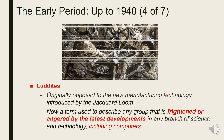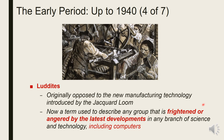The Luddites were people who originally opposed the new manufacturing technology introduced by the Jacquard loom. Now, the term Luddites is used to describe any group that is frightened or angered by the latest developments in any branch of science and technology, including computers.